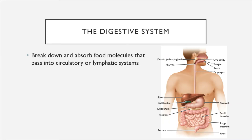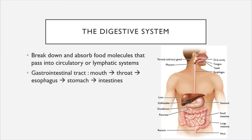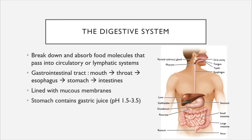The digestive system, also known as the gastrointestinal tract, starts with the mouth, leads to the throat, then the esophagus, stomach, intestines, and out the anus. It's lined with mucous membranes, and in particular, the stomach contains one of the more powerful lines of defense in your body, which is gastric juices that have a very low pH of 1.5 to 3.5.